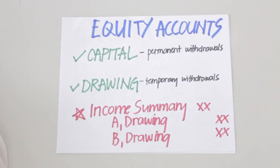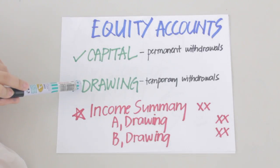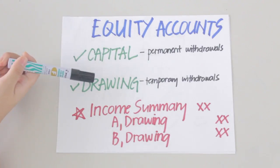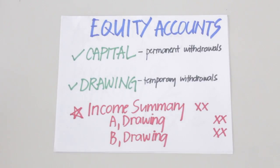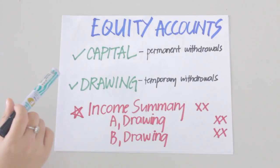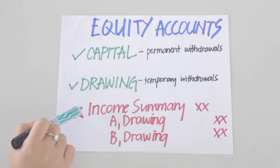The first thing to remember is that two equity accounts are maintained for each partner in the partnership books: the capital account and the drawing account. Permanent withdrawals are closed to the capital account, while temporary withdrawals are closed to the drawing account. For partnerships, a partner's share in net income is credited to the drawing account — this is different from a sole proprietorship where income is closed to the capital account.